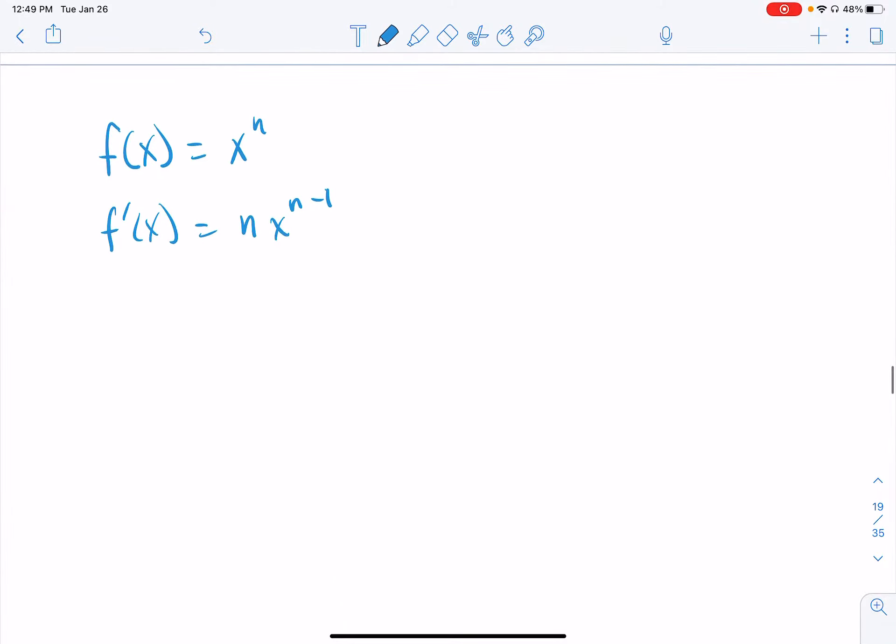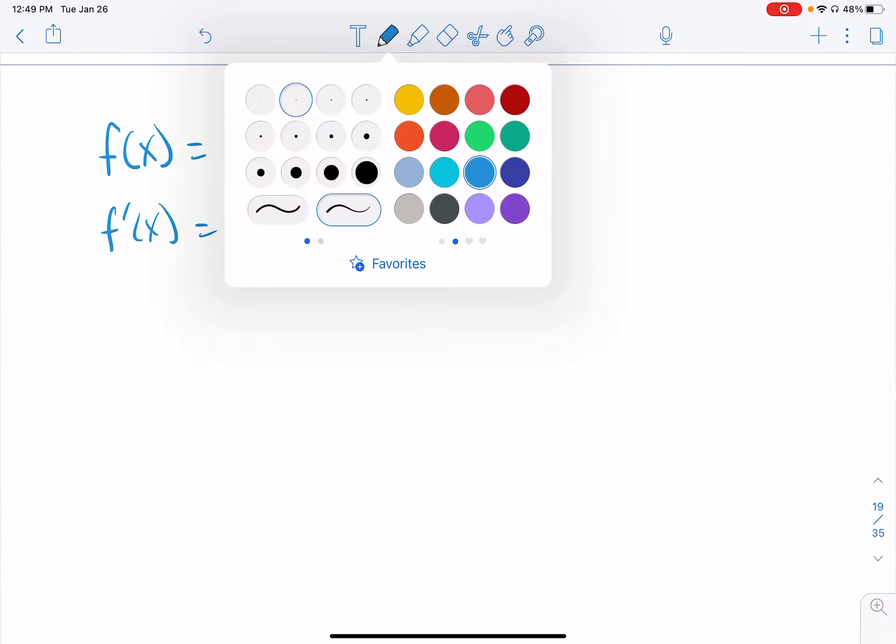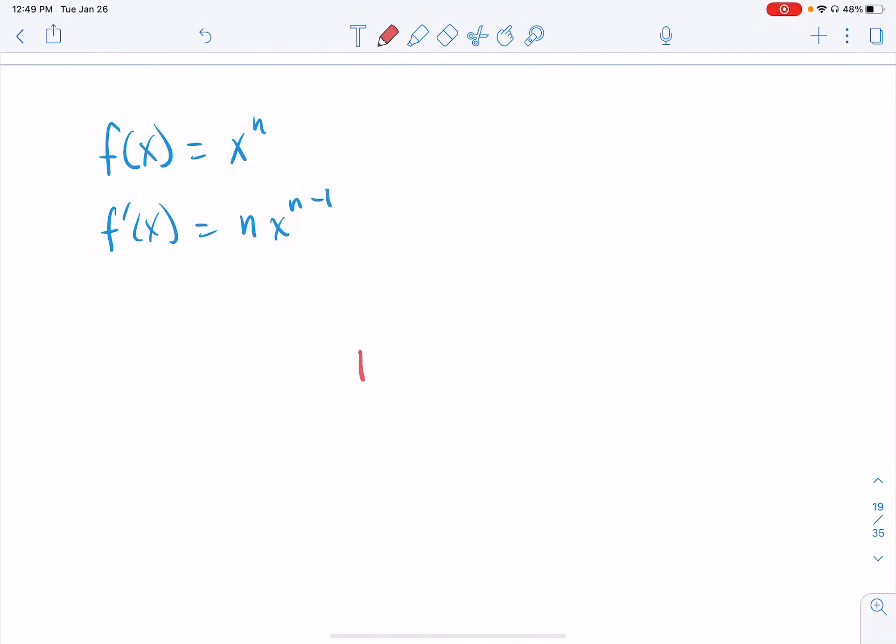So the issue that we have now is that that's not the color I choose. Here's my function. f of x is equal to x to the n. And I want to work it backwards to find its antiderivative.